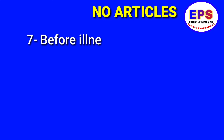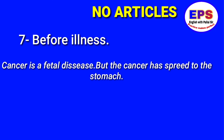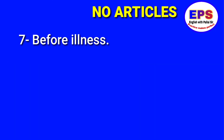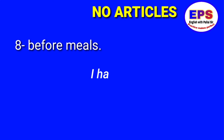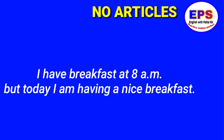Before names of illnesses, no article is used: 'Cancer is a fatal disease.' But when referring to a specific case: 'The cancer has spread to the stomach' — here 'the' is used. Also, no article before meals: 'I have breakfast at 8 AM.' But for a specific meal: 'Today I am having a nice breakfast' — here 'a' is used because it is specific.